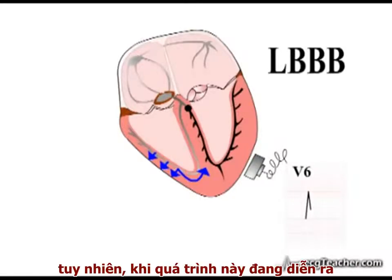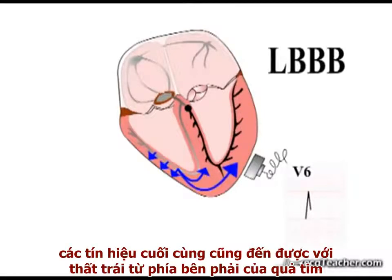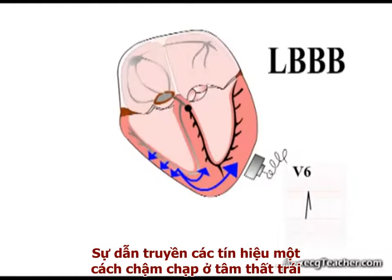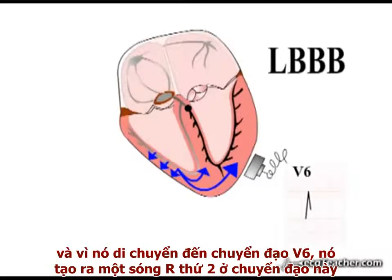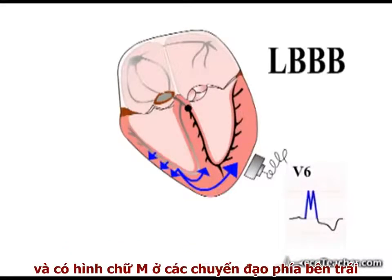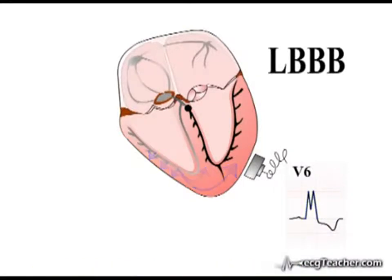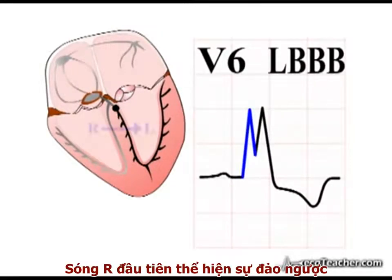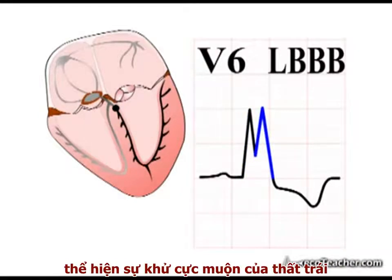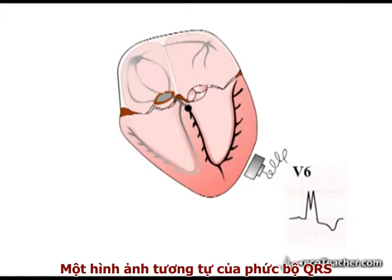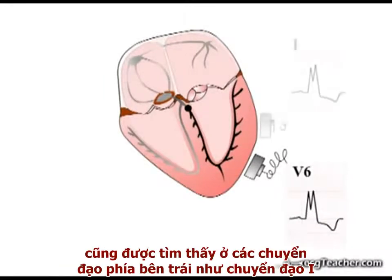However, as this process is taking place, the signal finally reaches the left ventricle from the right side of the heart. The slow spread of signal through the left ventricle dominates all others and, as it is moving towards V6, it generates a second R wave in this lead. This QRS morphology is the broad M-shaped QRS complex in the left-sided leads characteristic of left bundle branch block. The initial R wave reflects reversal of the normal pattern of depolarisation in the septum, while the second R wave reflects delayed left ventricular depolarisation. A very similar QRS morphology is produced in the left-sided frontal lead, lead 1.